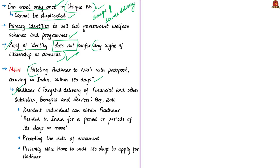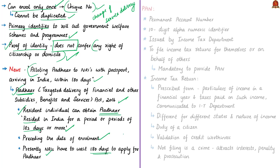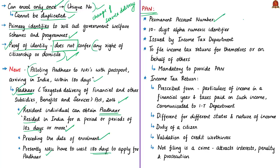As per the Aadhaar (Targeted Delivery of Financial and Other Subsidies, Benefits and Services) Act of 2016, only a resident individual is entitled to obtain Aadhaar. A 'resident,' as per the Act, means an individual who has resided in India for a period or periods amounting to 182 days or more in the 12 months immediately preceding the date of application for enrollment. So the Finance Minister is talking about such NRIs with an Indian passport — so far they had to wait for 180 days after arrival in India, but the budget has proposed to remove this waiting time.